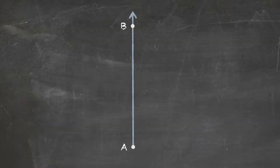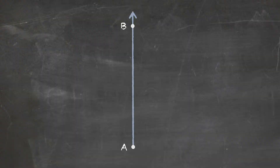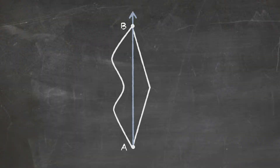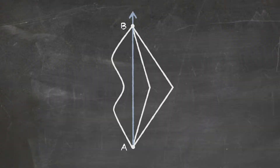This means that if you start with a straight time-like line connecting two events, like the beginning of a journey and the end of a journey, all the other curvy lines connecting those two events take less time. And the curvier the path, the less time it takes. The line corresponding to the longest amount of time is the straight line connecting those two events.